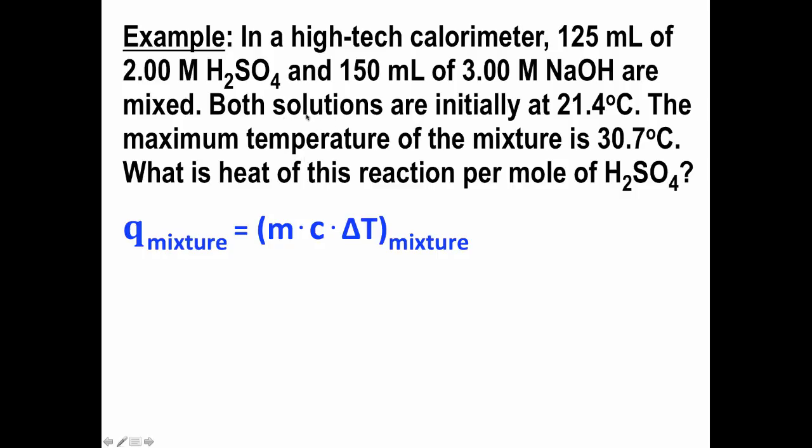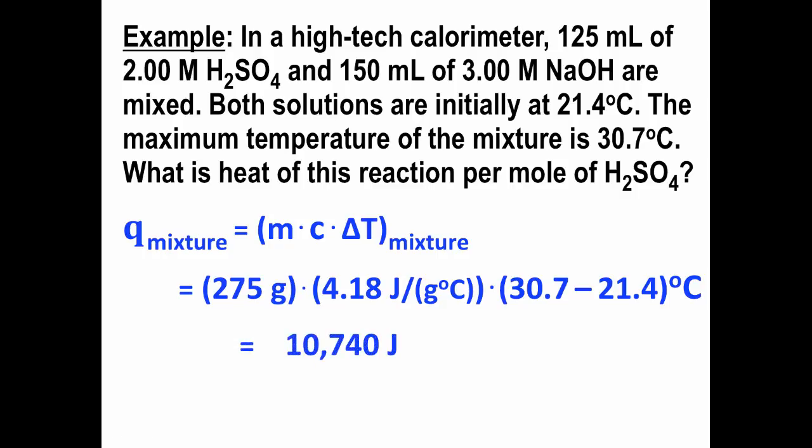Specific heat of solution, the closest thing we know is the specific heat of water, and so we will treat these solutions as if they have approximately the same specific heat as water, and then the temperature change is fairly straightforward. So we have 275 grams of solution that's absorbing energy, we treat the solution as if it's water, so 4.18 joules per gram degree Celsius for its specific heat, and then final minus initial temperature gives us 10,740 joules, and it's a positive value, which means that the mixture absorbed energy.